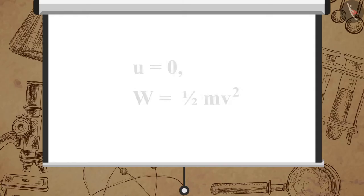If the object was stationary when it started, that is U is equal to 0, then W is equal to one-half M V square.